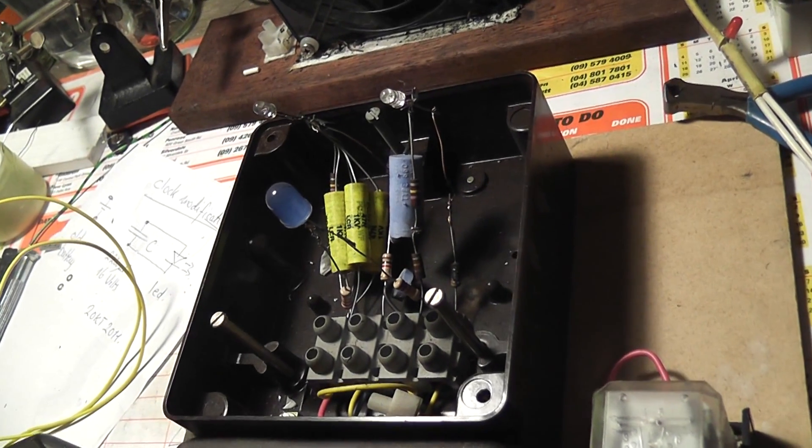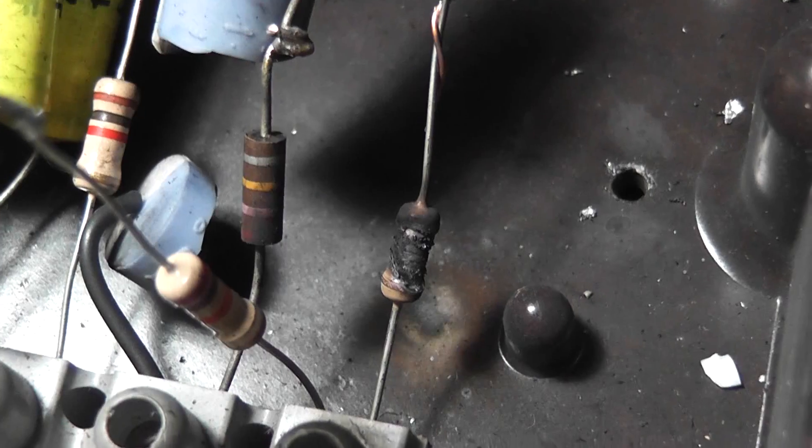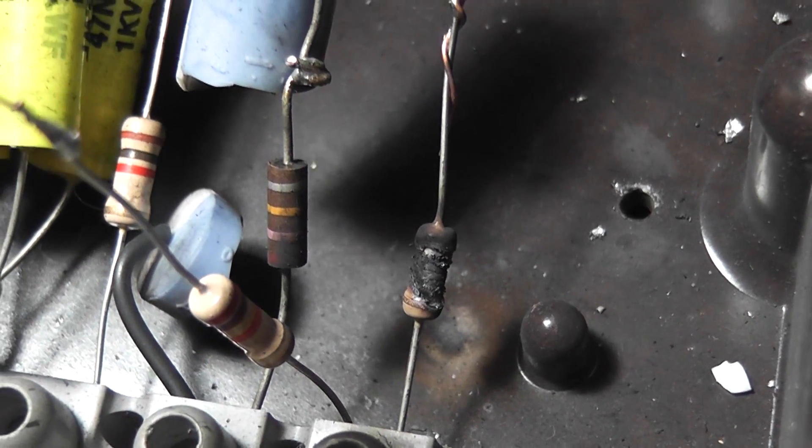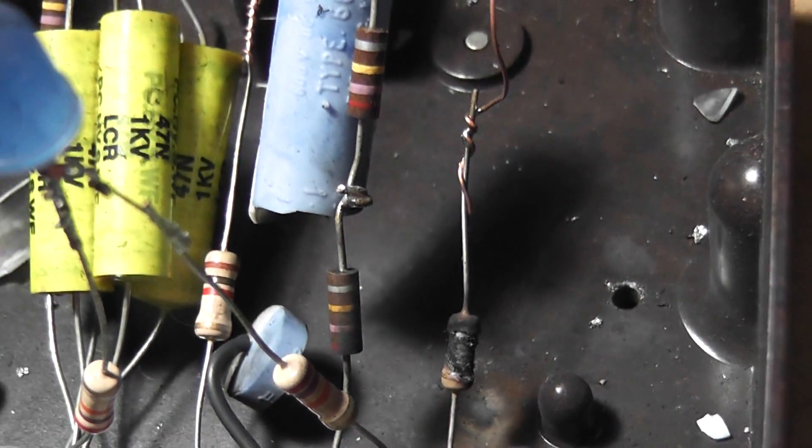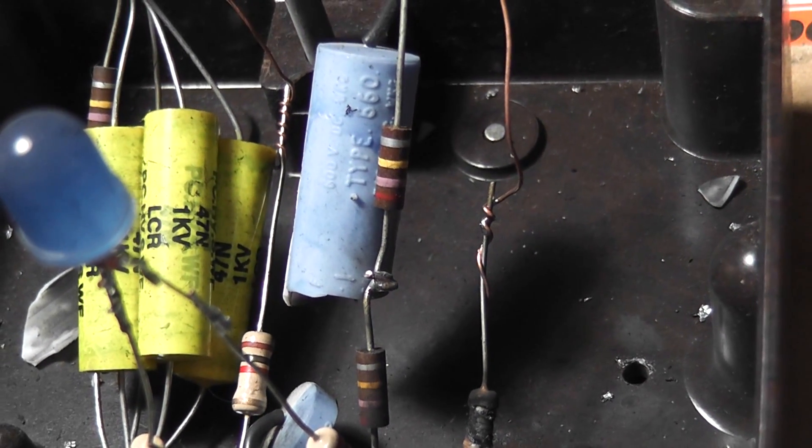Smoke still comes out of the casing. That is the 680 ohm resistor which acted like a fuse in this.